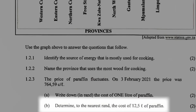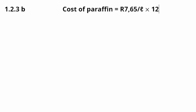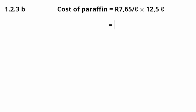Question 1.2.3b asks us to determine, to the nearest rand, the cost of 12.5 liters of paraffin. The cost of 12.5 liters equals R7.65 per liter multiplied by 12.5 liters, which gives us 95.625 rand. Rounding this value to the nearest rand gives us a final answer of R96.